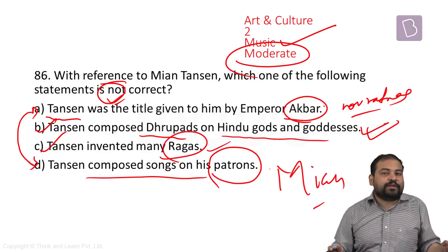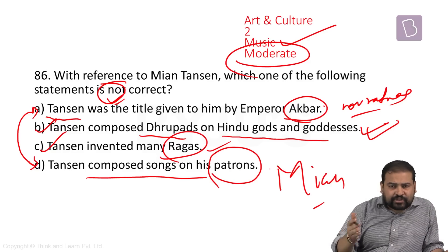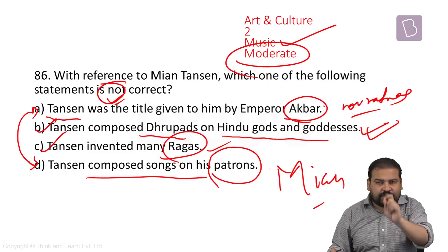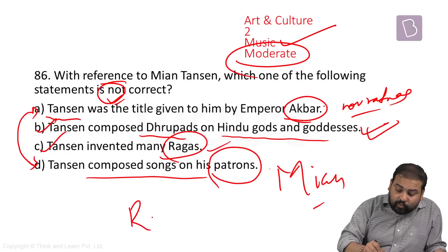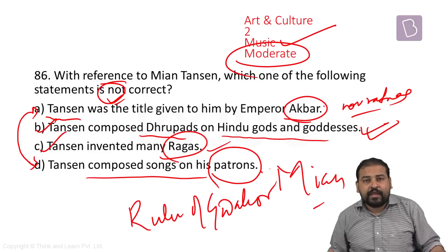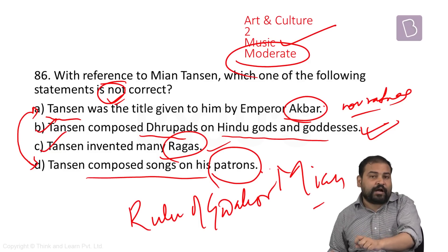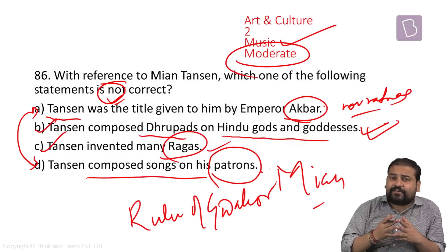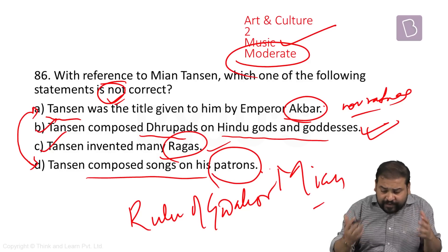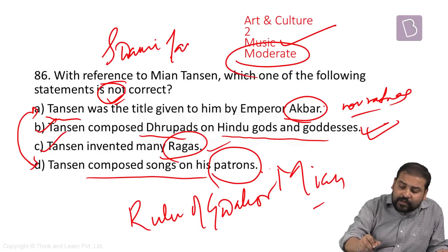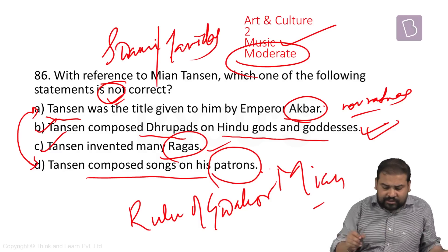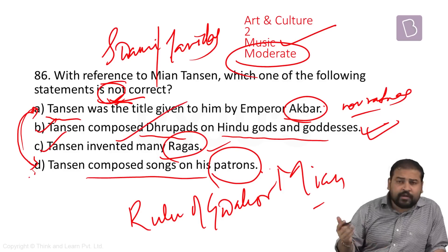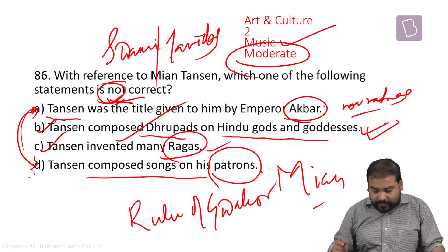Akbar only gave the title 'Mia Tansen' to this great man — he was one of the Navratnas. The honorific title 'Tansen' was actually given to him by the ruler of Gwalior, where he was initially based. That particular name was not given by Akbar. Tansen was a great Indian musician from Hindustani classical music who had started as early as age six, and in his time, only his guru Swami Haridas was considered equivalent to him. The answer is A.